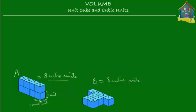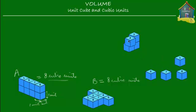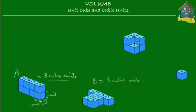Similarly, I can make another object using eight cubes, placing them maybe like this. And what I've got here is a solid called C, which also has a volume of eight cubic units — same as objects A and B — because it's also made of eight unit cubes. So different solids can have the same volume as long as they are made of the same number of unit cubes.